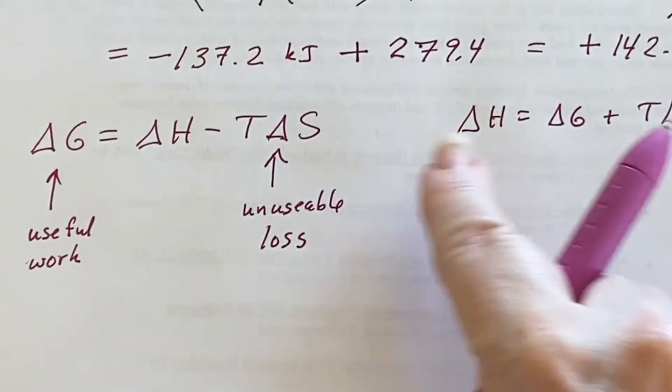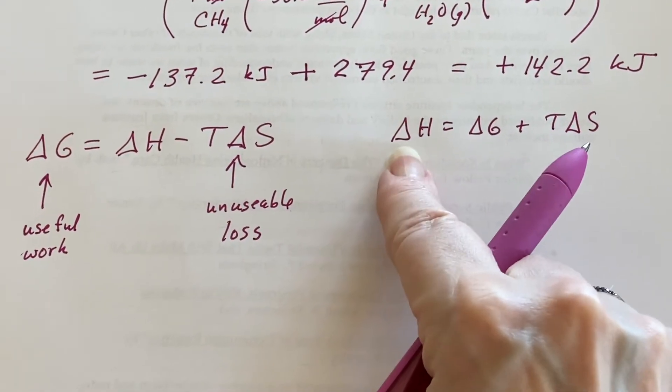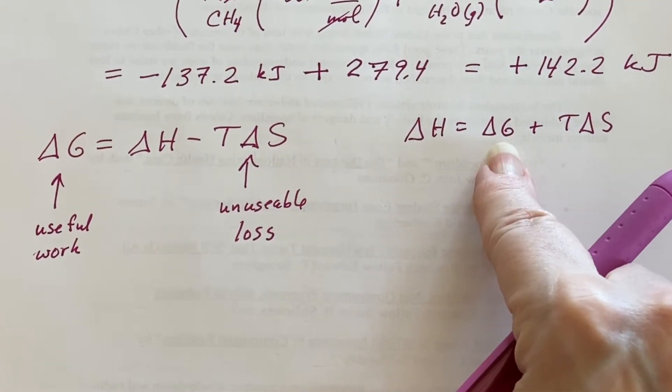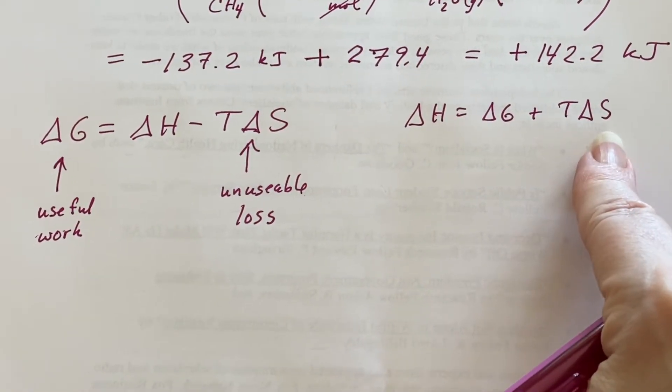That would be another way of writing it, in which then you would say okay here's all the energy that was released. Here's the Gibbs free energy I can use to do work and this is the part lost to entropy.